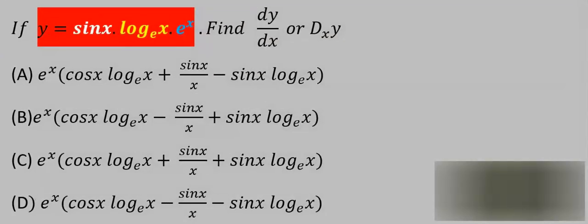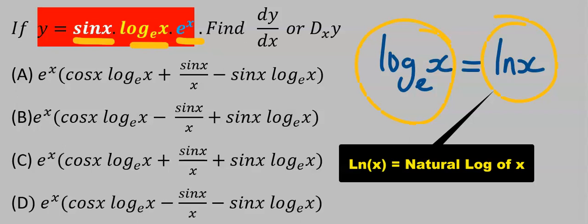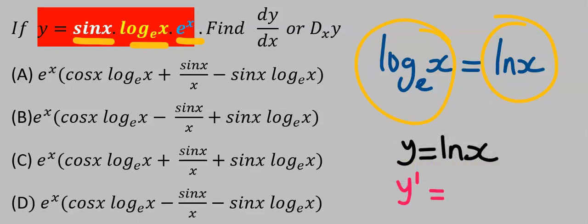Consider this question. Here we are given three separate variables. Remember that log x to base e is the same thing as the natural log of x, and when we differentiate the natural log of x, our answer is 1 over x. Always remember the basic derivative table.